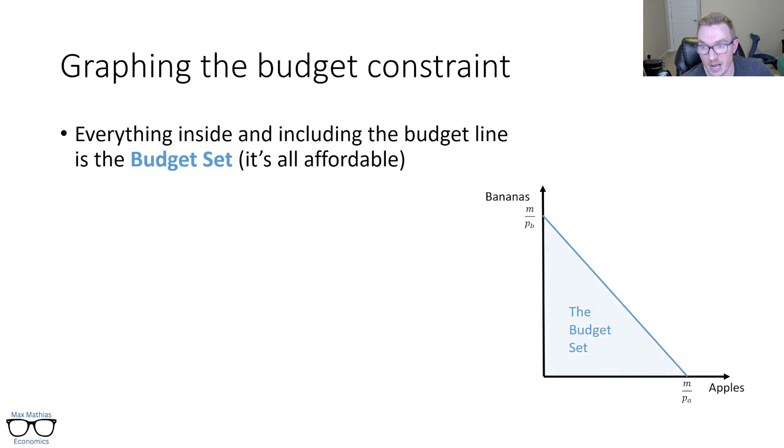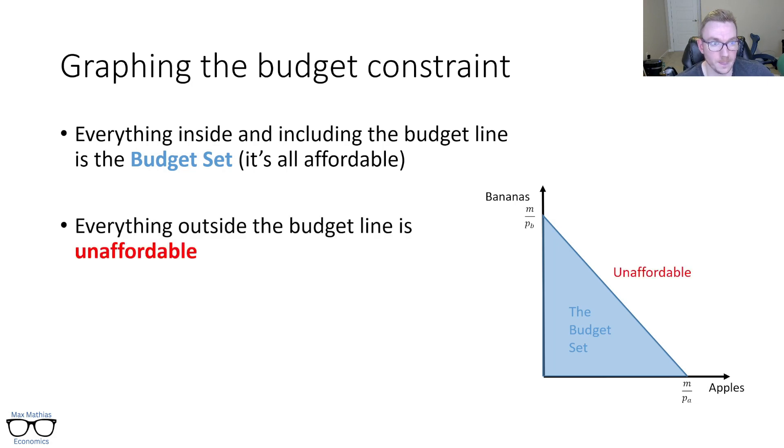So to keep graphing here, everything inside and including that budget line itself is called the budget set. So that big blue triangle right there, which also is the blue line, is the budget set. Generally, though, we think people like to consume on the blue line. I'll talk about that a little bit more later. Everything outside that budget line, though, is unaffordable. Given my income and current prices, I can't afford that, you know, 10 and 10, like I talked about in the example. It's unaffordable, costs more than $50.